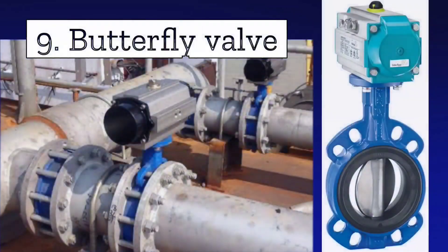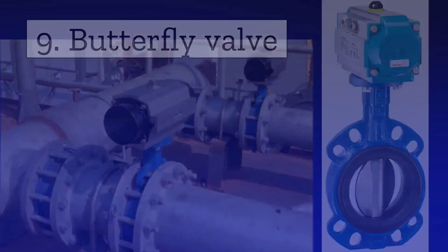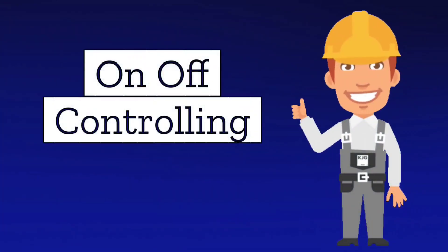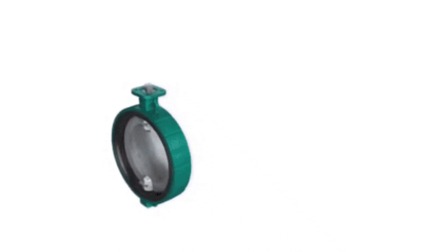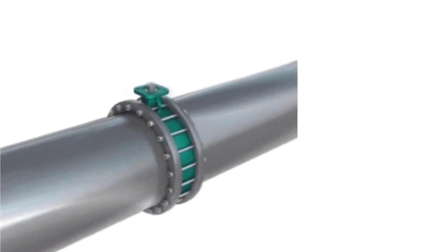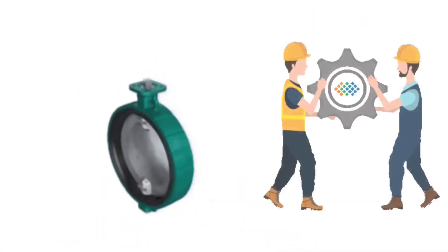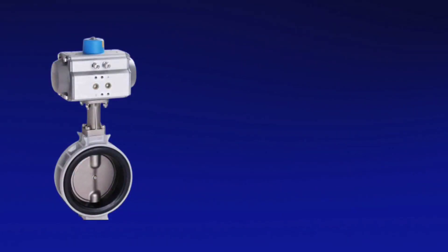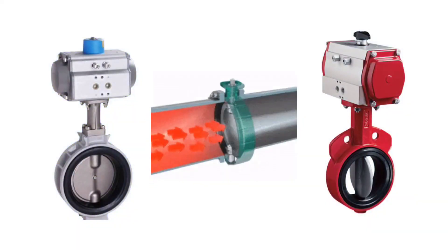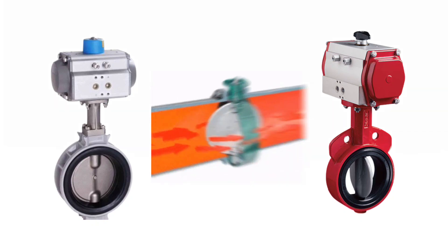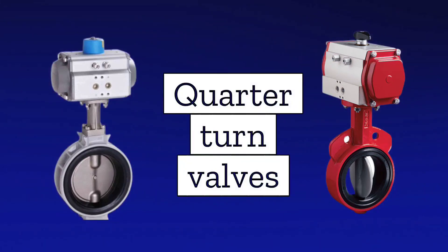Next is butterfly valve. These valves are also used for on-off controlling. These valves have a butterfly which passes and stops the flow of fluid. Hence they are called butterfly valves. Because butterfly rotates quarter turn or 90 degrees, therefore these valves are also called quarter turn valves.